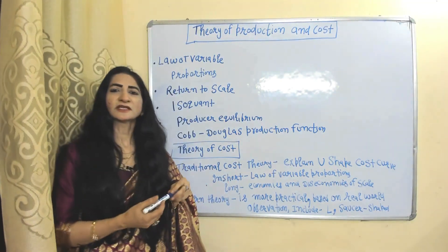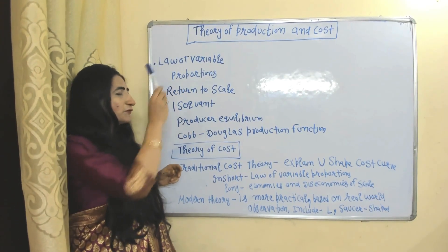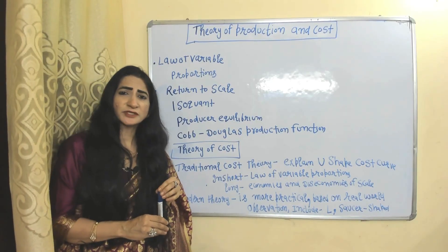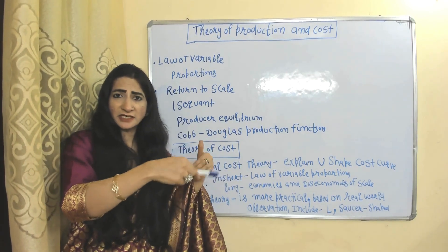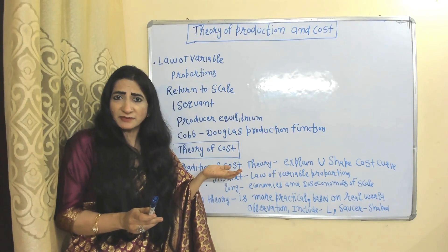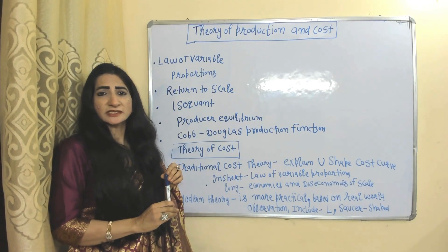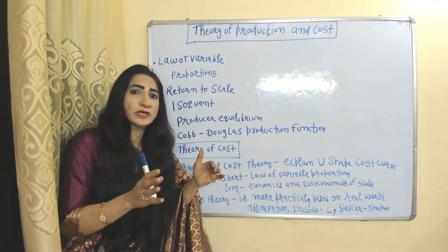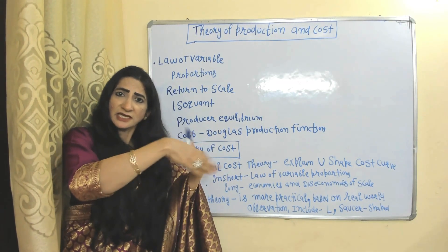In theory of production, we study the law of variable proportions — a short-run law which shows that when we change only one input like labor and keep other inputs constant, output initially increases at an increasing rate, then at a diminishing rate, and eventually starts declining. Returns to scale is a long-run concept showing the change in output when we can change all inputs, since during the long run no input is fixed.